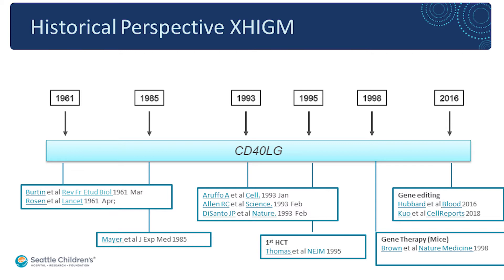It wasn't until 1985 when Mayer, working in Henry Kunkel's lab at the Rockefeller, took B cells from patients with hyper-IgM syndrome and mixed them with an accessory cell line — a tumor line. All of a sudden these B cells started making IgG. What that taught us was that the B cells had a problem, but they needed help from T cells that formed part of the tumor cell line — these T cells were telling the B cells what to do. By the early 1990s, we knew the disease was X-linked and where on the X chromosome the defect was located.